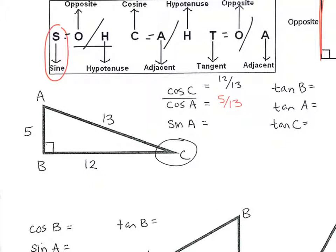The sine of A: sine is opposite divided by hypotenuse. Start at A — what is opposite A? It's 12. And the hypotenuse is still 13. So sine of A is 12 thirteenths.